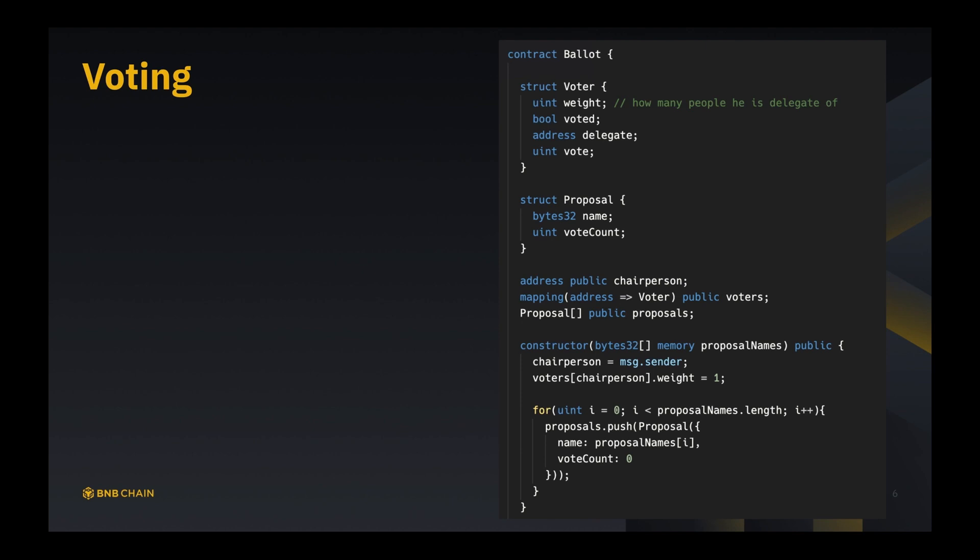There are some special tricky cases. For example, say person A picks person B as his delegate. If at this time person B hasn't voted yet, that's the easy case. We just increase the weight of person B, so now person B's votes will be worth two votes rather than one. However, if right now person B has already voted and made his choice, say voted to proposal A, then person A selecting person B as delegate will be equivalent to person A voting to proposal A directly.